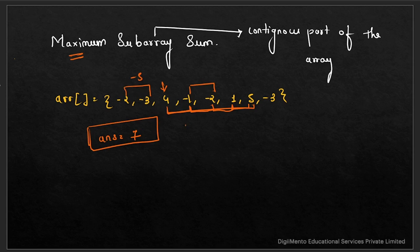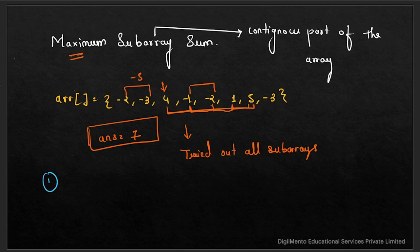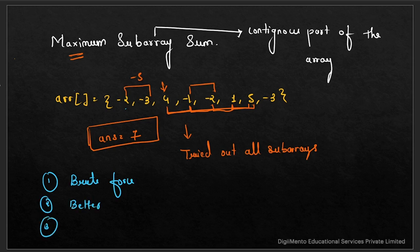We've tried all possibilities to find the maximum subarray. There are three ways to solve this problem: first is the brute force approach, second is a better approach where we optimize things, and the third is the fully optimal approach in terms of both space and time complexity.